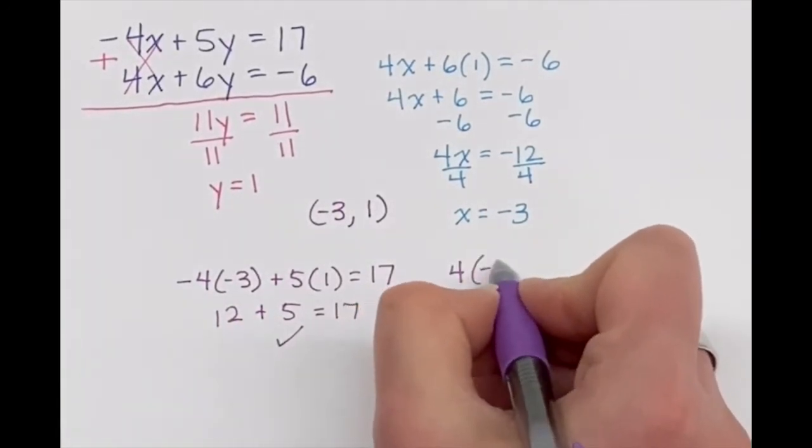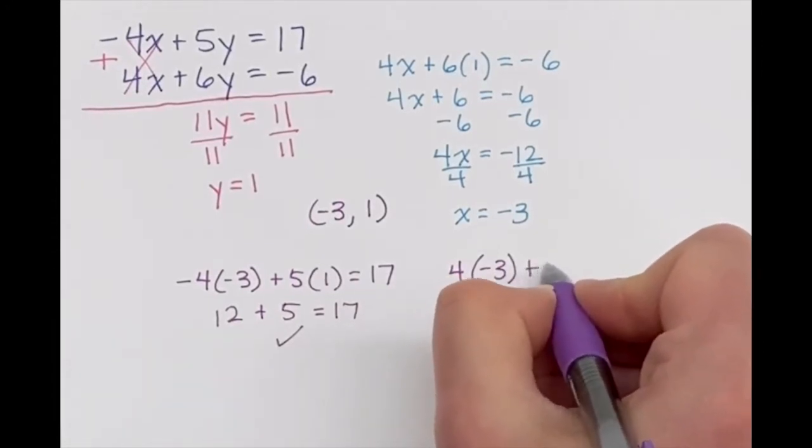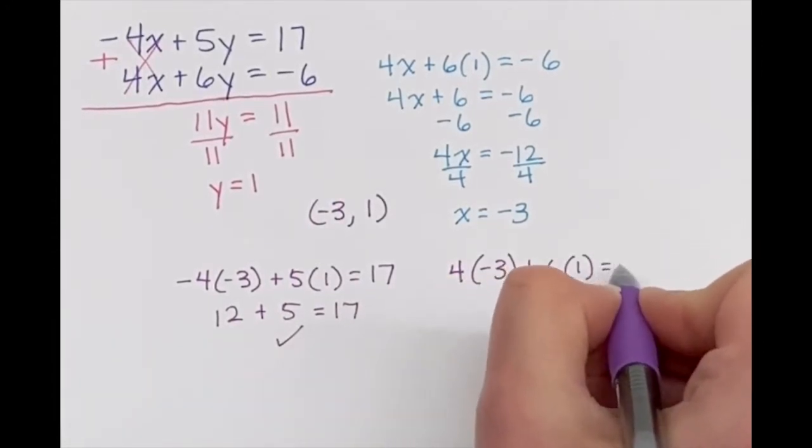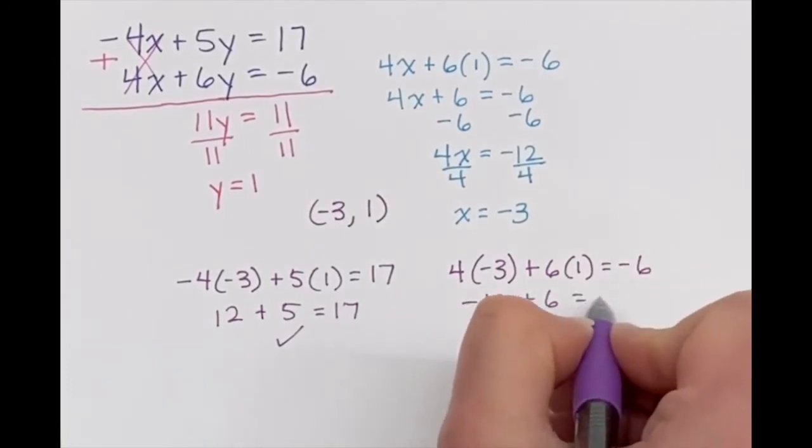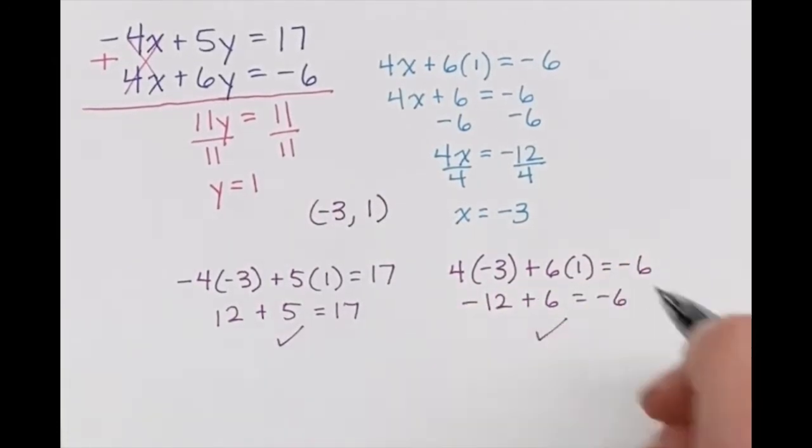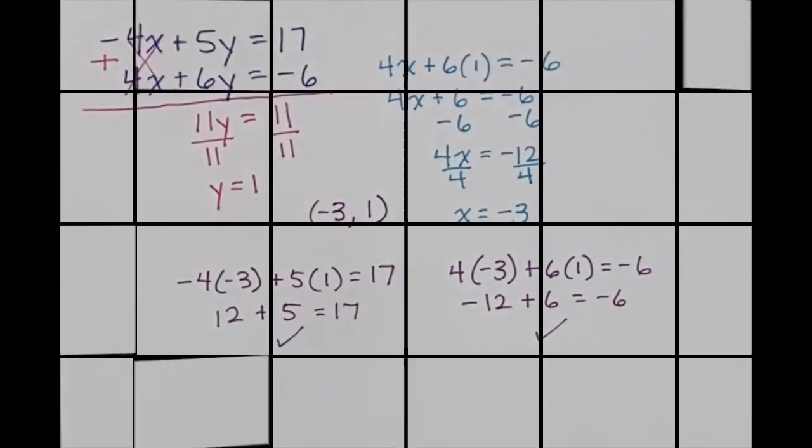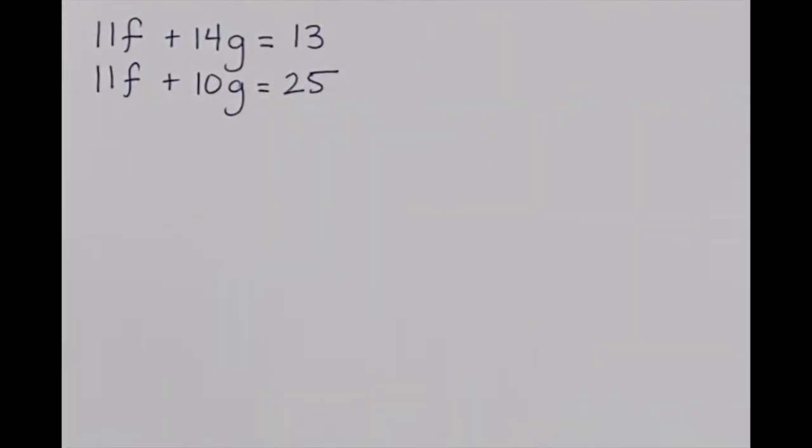And then 4 times negative 3 for the bottom equation plus 6 times 1 is equal to negative 6. Negative 12 plus 6 is equal to negative 6. Again, you bet it is. You got it. So now we're going to look at a second example.